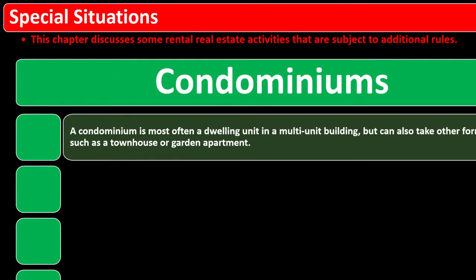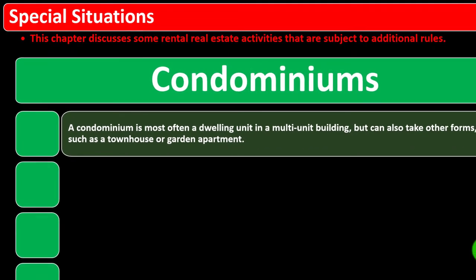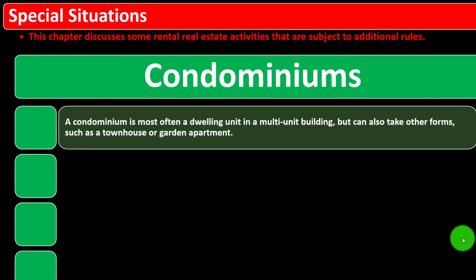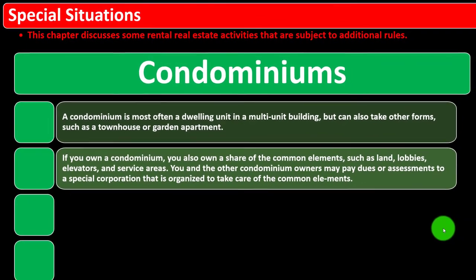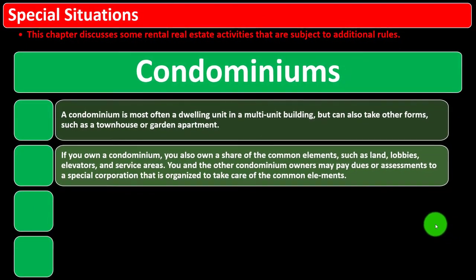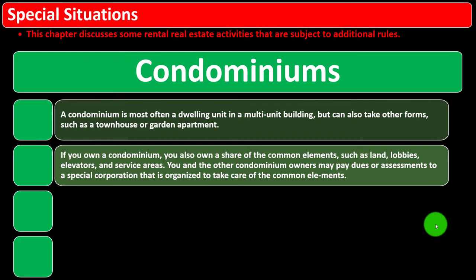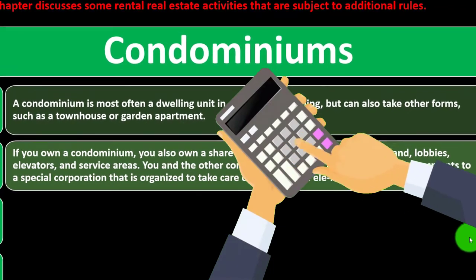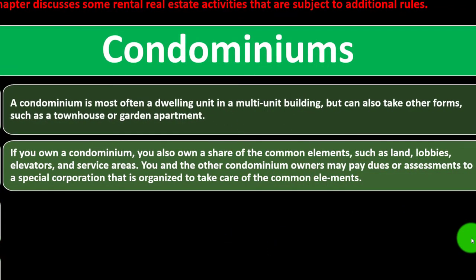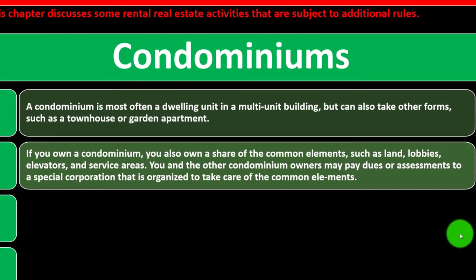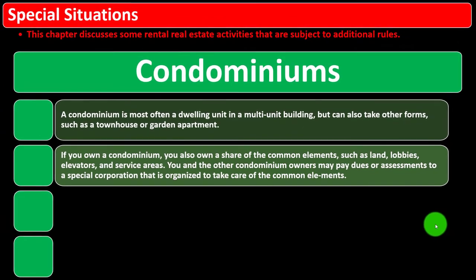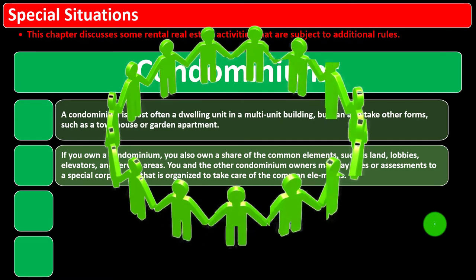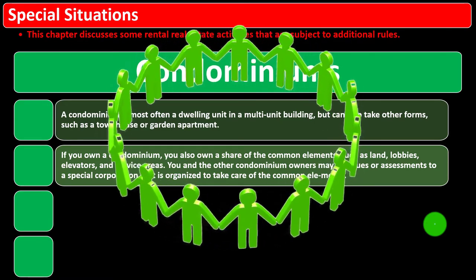A condominium is most often a dwelling unit in a multi-unit building, but can also take other forms such as a townhouse or garden apartment. If you own a condominium, you also own a share of the common elements, such as land, lobbies, elevators, and service areas. This form of ownership can lead to some complexity in tax calculations. You and other condominium owners may pay dues or assessments to a special cooperative organized to take care of the common elements.